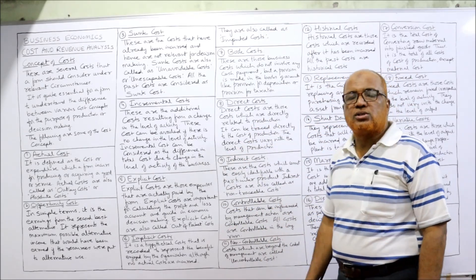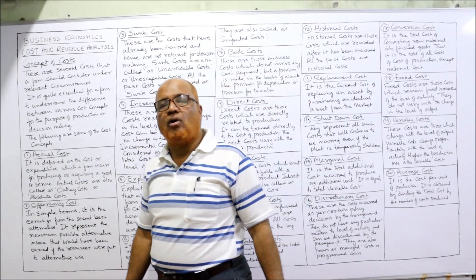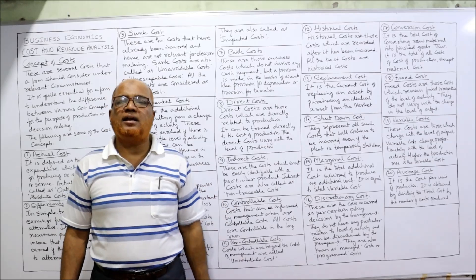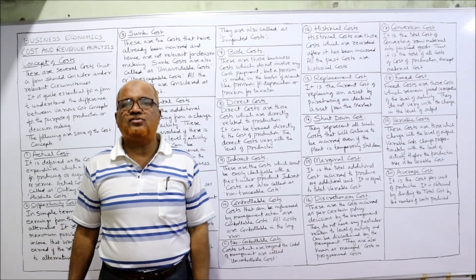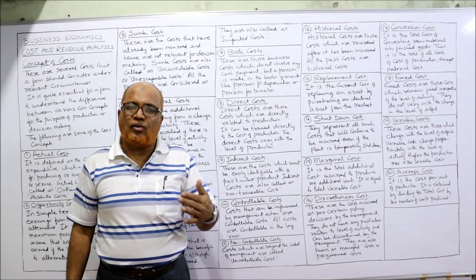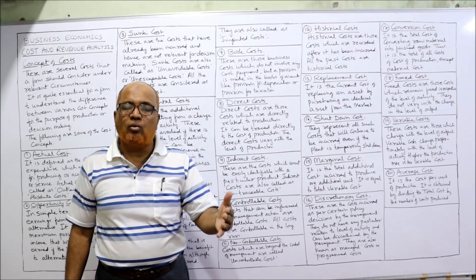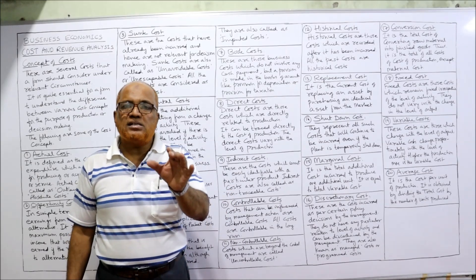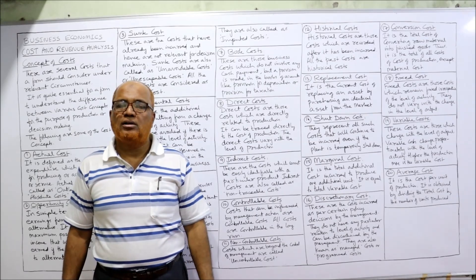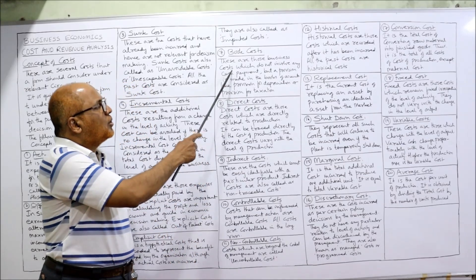Next is book cost. There are some costs which do not involve any cash payment — only adjustment entries are made. Examples of such costs are depreciation, provision for depreciation, provision for taxation, and provision for doubtful debts. These are costs but do not involve any cash. This non-cash cost is called book cost.